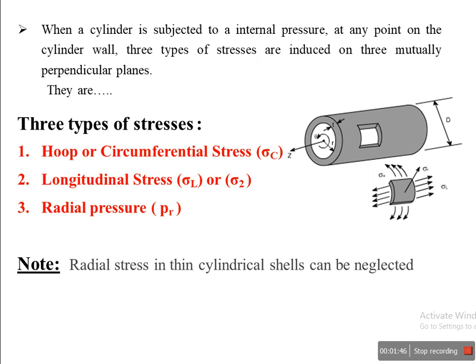When a cylinder is subjected to internal fluid pressure, stresses are induced in the cylindrical shell. Those stresses are hoop stresses, also known as circumferential stresses, longitudinal stress, and radial stress. Hoop stresses are developed along the circumference, longitudinal stresses along the longitudinal axis, and radial stresses along the normal to the thickness. In the case of thin cylinders, the radial stress intensity is negligible, whereas for thick cylinders, radial stress is also considered.